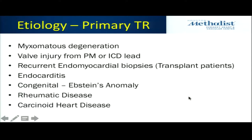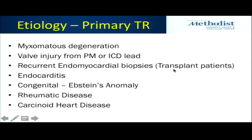Primary TR is really estimated to only be about 20% of the problem, but we certainly do see myxomatous degeneration, including prolapse, injury from device leads, injury from transplant biopsies — when they come back with nice healthy cordal tissue, that's a bad outcome, but it does happen. And then more rare things, thankfully.